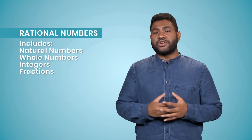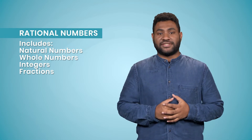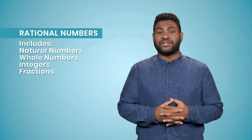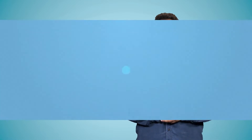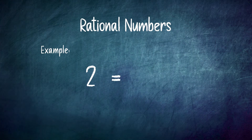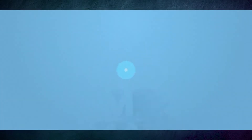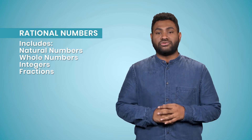Next, we have rational numbers. This group includes all three groups we have learned so far, and it also includes fractions. Every integer, natural, or whole number is a rational number, as they all can be expressed as a fraction. For example, two can be written as two over one, which is a fraction, and hence a rational number. Remember, there are infinite rational numbers between any two rational numbers.